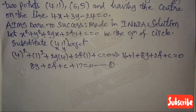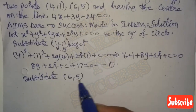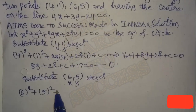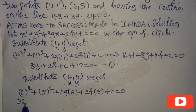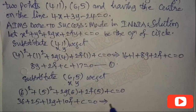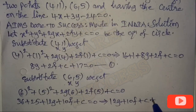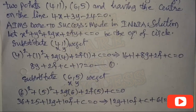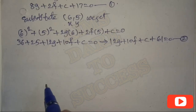Again, substitute the second point (6, 5) in the standard equation of the circle. We get: 6² + 5² + 2g(6) + 2f(5) + c = 0, giving 36 + 25 + 12g + 10f + c = 0, so 12g + 10f + c + 61 = 0. Let this be Equation 2.